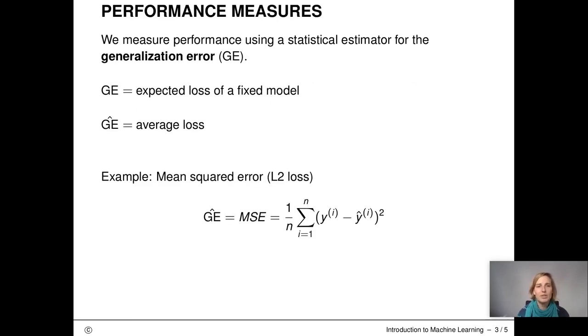As we want to estimate a model performance in general, we need to think again about loss functions. The expected loss tells us the expected performance of our model. We call this expected loss generalization error. Since we can't compute the generalization error directly, we have to estimate it. We do that by computing the average loss. We can do that using the training data or new independent data.